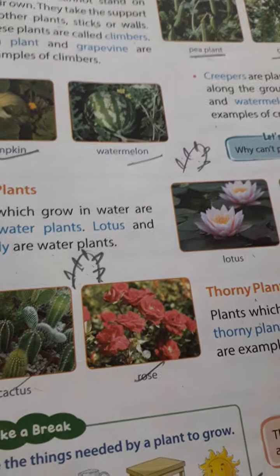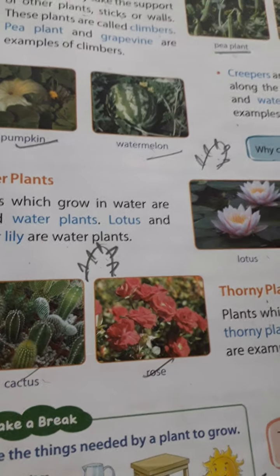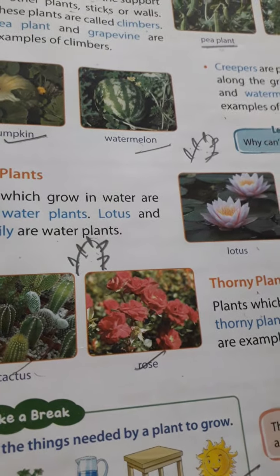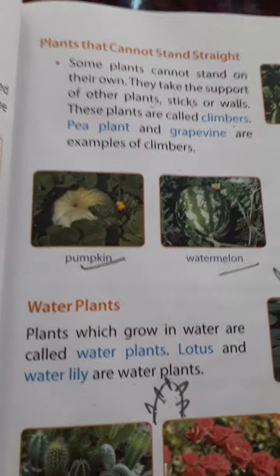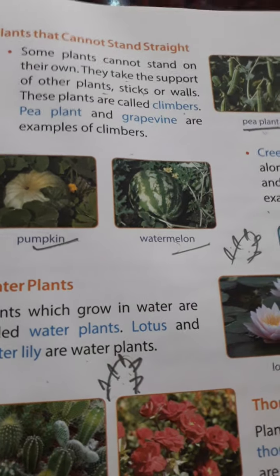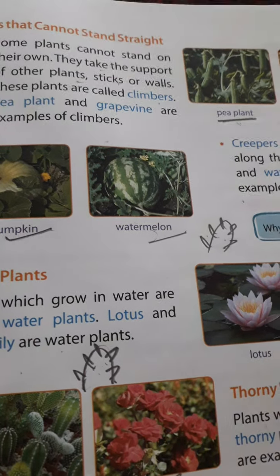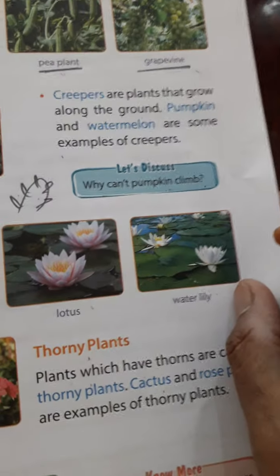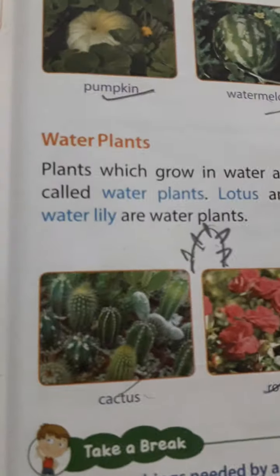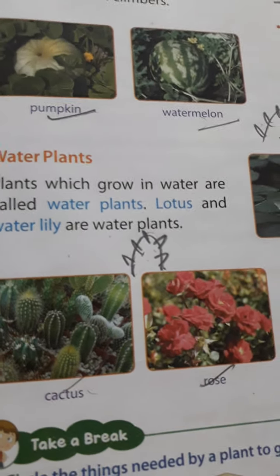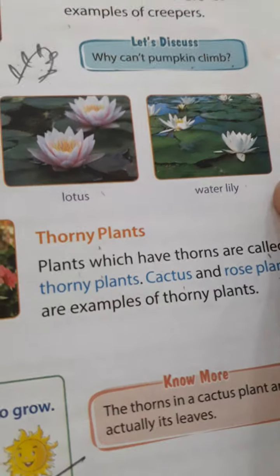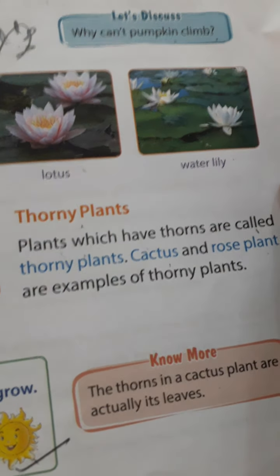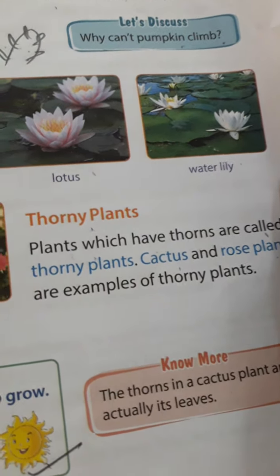To summarize: trees are big and tall plants like banyan, coconut, and neem. Shrubs have a thin and strong stem — rose and jasmine are examples. Herbs have a soft and green stem — coriander and mint are examples. Creepers grow along the ground — pumpkin and watermelon. Water plants include water lily and lotus. Thorny plants include cactus and rose.